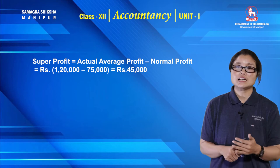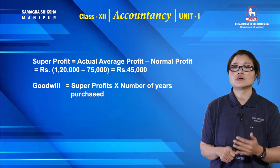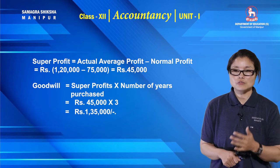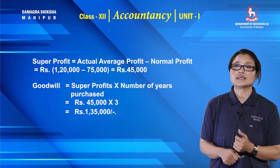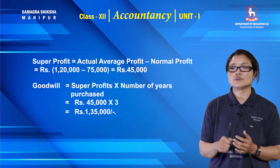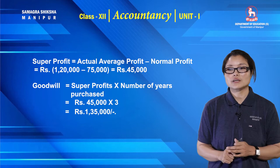Now apply the goodwill formula. Goodwill equals super profit into number of years purchase equals 45,000 into 3 equals 1,35,000. This is the end of question number 2.